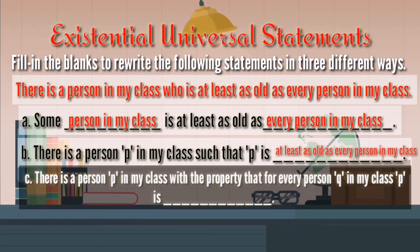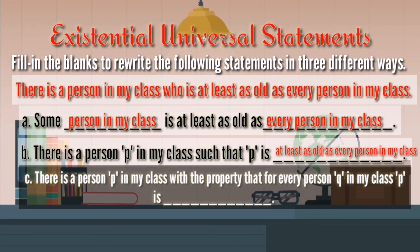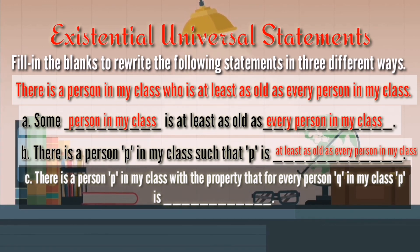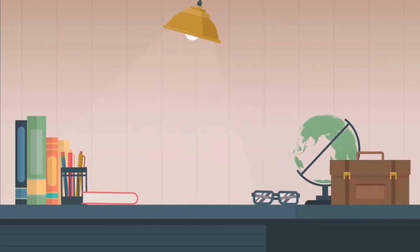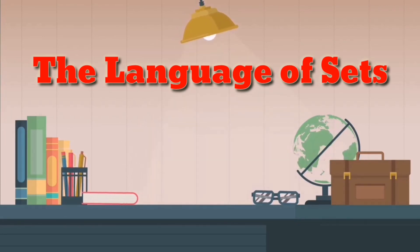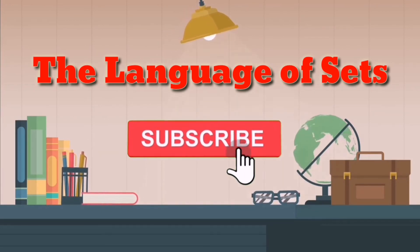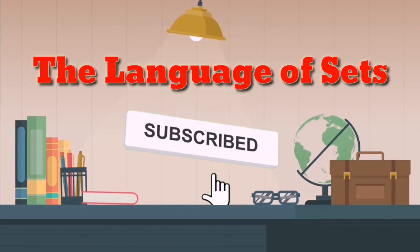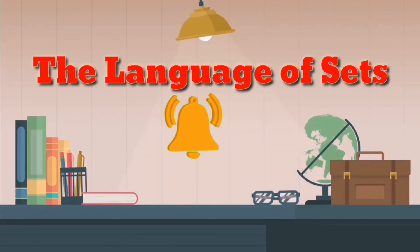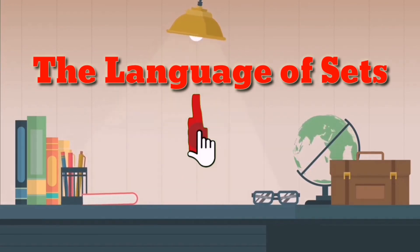Now let's have the last one: 'There is a person P in my class with the property that for every person Q in my class, P is blank.' Leave your answer in the comment section. Thank you for watching this video. Hope you learned something today. For the next upload, we are going to talk about the language of sets. Don't forget to like, subscribe, and hit the notification bell for more updates. Bye!